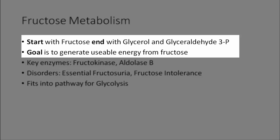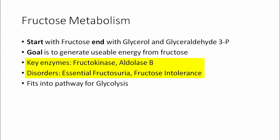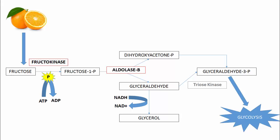To highlight our key pathway elements for fructose metabolism, we can see that we start with fructose and end with glycerol or glyceraldehyde-3-phosphate. Our goal in this pathway is to generate usable energy from fructose. The key enzymes involved are fructokinase and aldolase B. The key disorders are essential fructosuria and fructose intolerance, and putting this into a larger context, we can see how this pathway fits into the pathway for glycolysis. This is our entire pathway laid out from left to right.